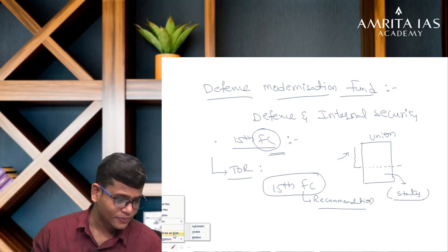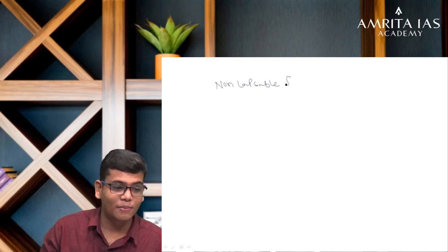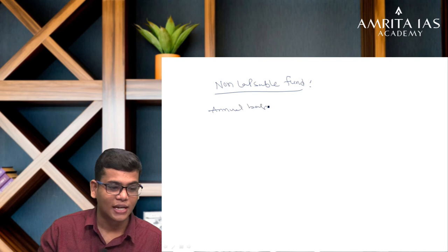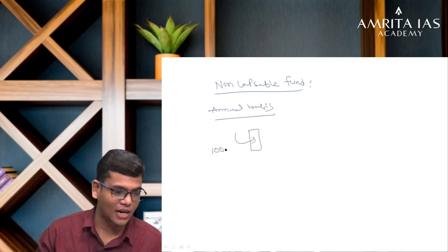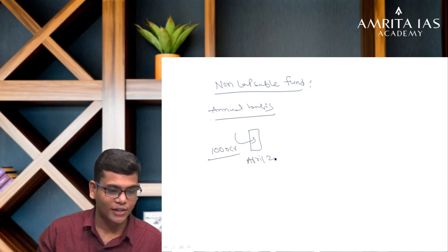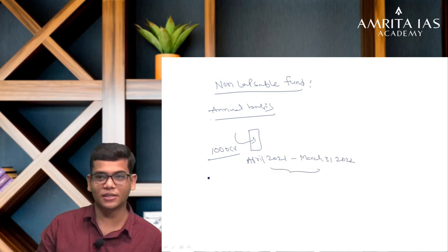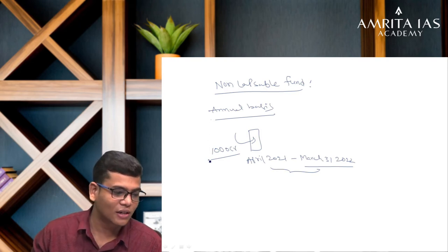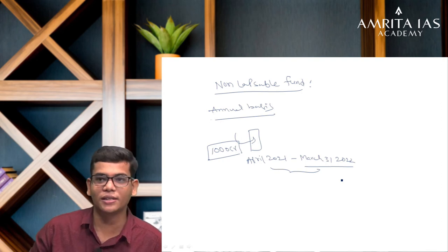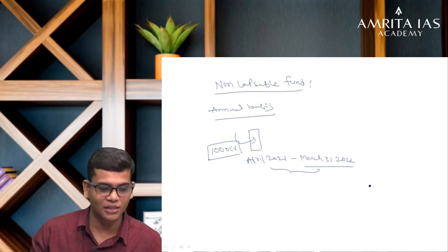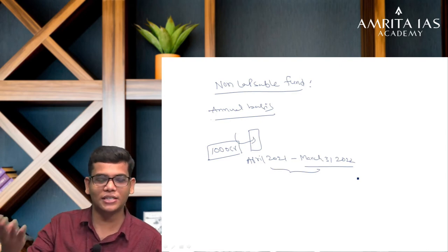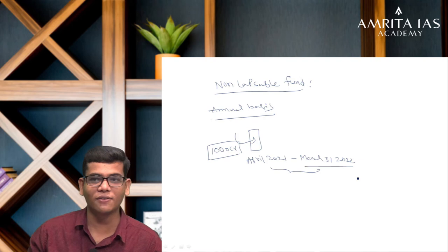This is a non-lapseable fund. In normal budget allocations, money is on an annual basis — suppose 1,000 crores are allocated for April 1, 2021 to March 31, 2022. If you do not spend it by March 31, 2022, that money lapses. But non-lapseable means even if you do not spend in this financial year, the money remains available for utilization in the next financial year.